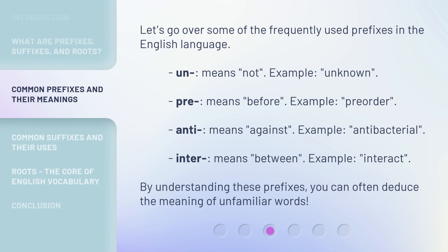Let's go over some of the frequently used prefixes in the English language. 'Un-' means not — example: unknown. 'Pre-' means before — example: pre-order. 'Anti-' means against — example: antibacterial. 'Inter-' means between — example: interact. By understanding these prefixes, you can often deduce the meaning of unfamiliar words.